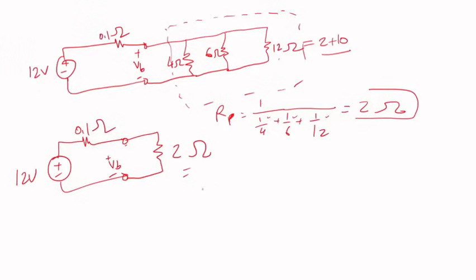If I do voltage divider, VB is just 2 divided by (2 plus 0.1) times 12 volts, which is 11.43 volts using the voltage divider formula.